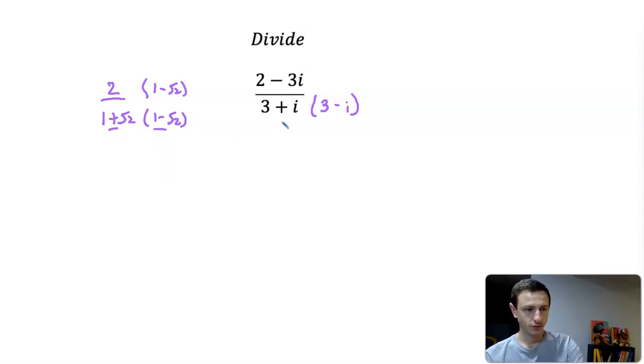So here we have plus, so this is minus. We're multiplying by 3 minus i. Whatever we do to the bottom we do to the top, so it's going to be times 3 minus i.